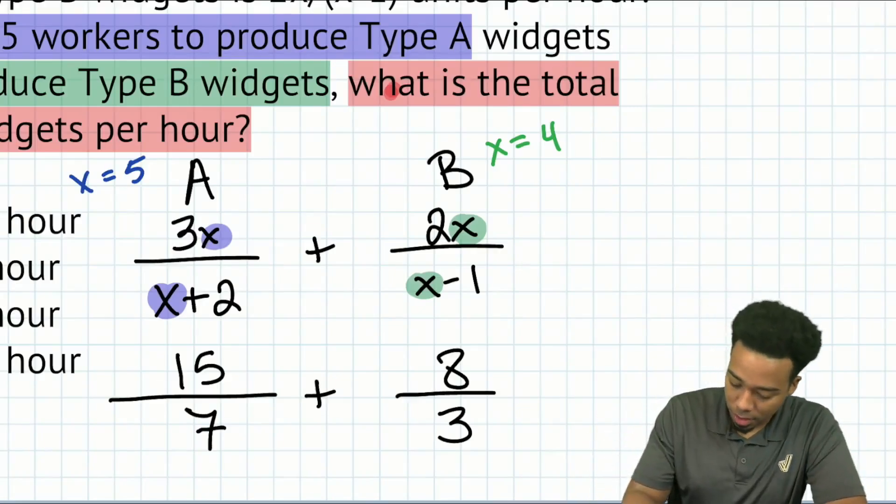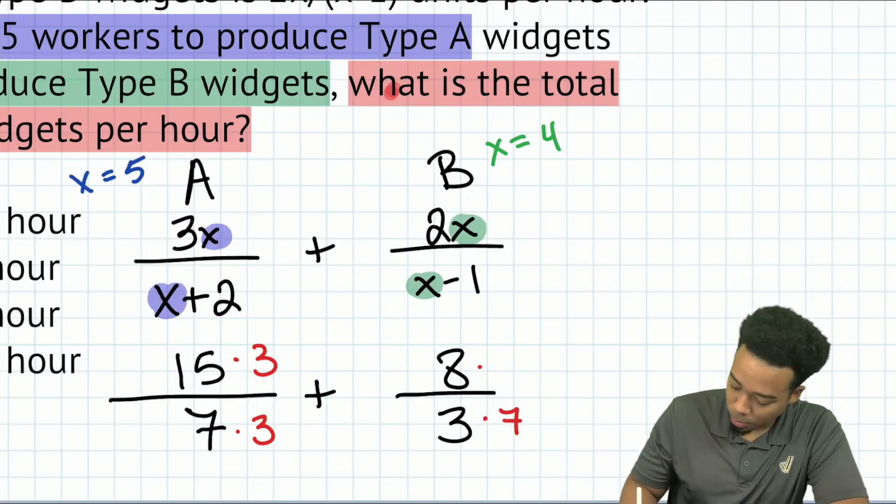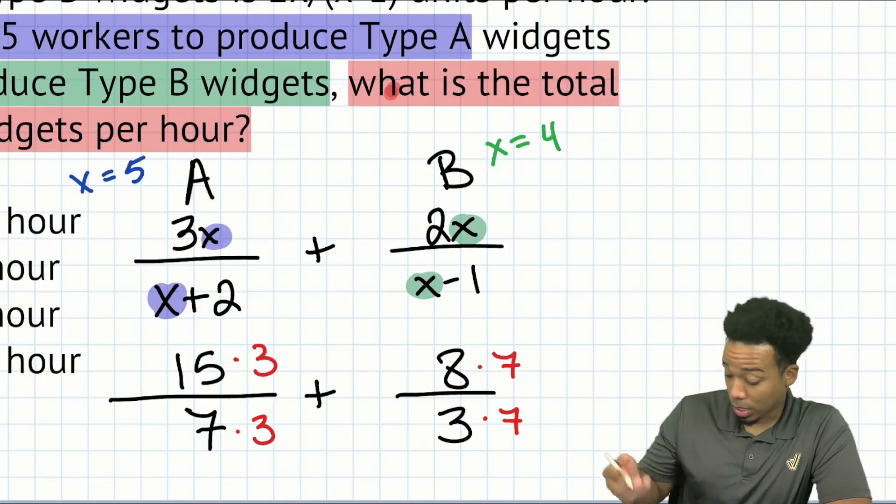So to get 21 from seven, we will multiply the numerator and denominator by three to get to 21 over here on the right side. We'll multiply the numerator and denominator by seven. So now that we're here, everybody, we're good to go.